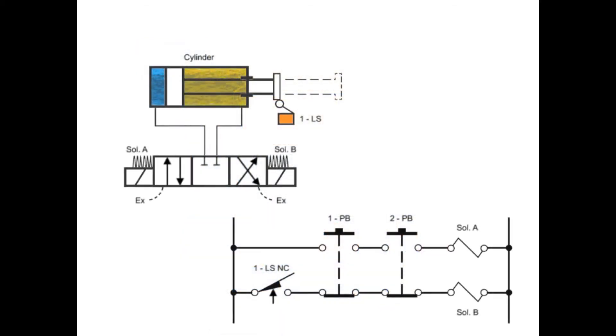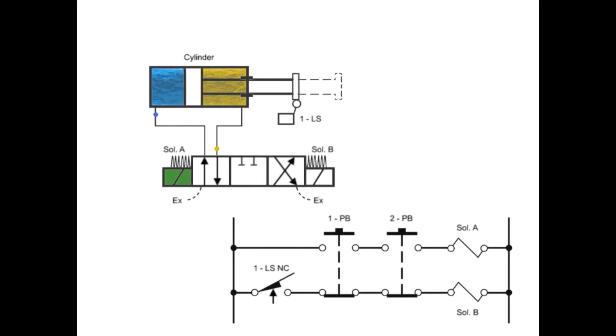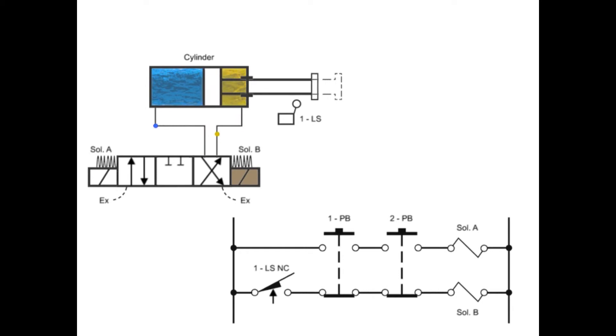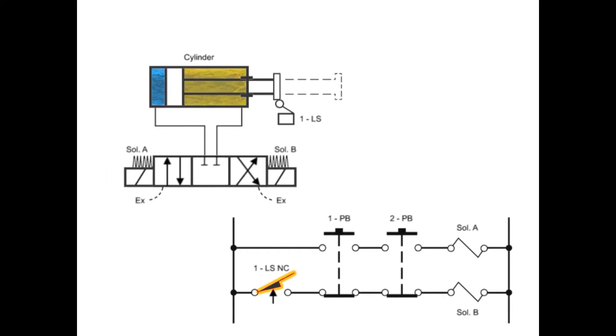In this circuit, a double-solenoid, three-position valve is connected to a cylinder, which actuates a limit switch. The valve's solenoids are operated by two buttons, each one having a normally open and normally closed set of contacts. They are wired with both their normally open and normally closed contacts in series.